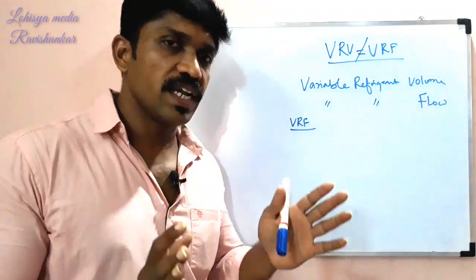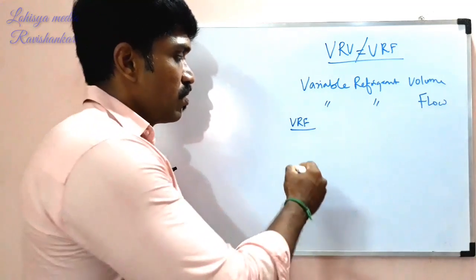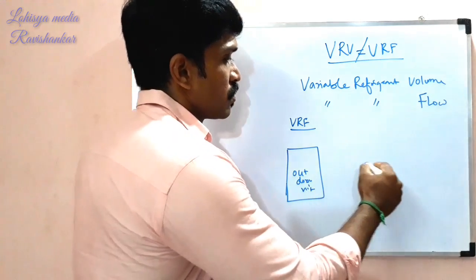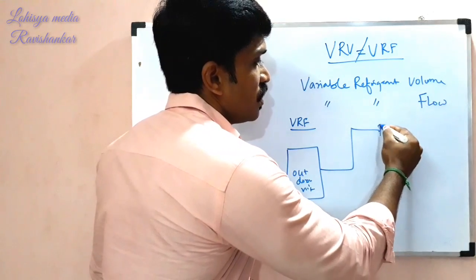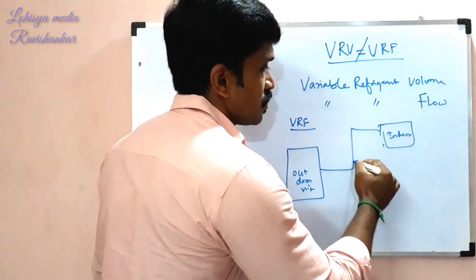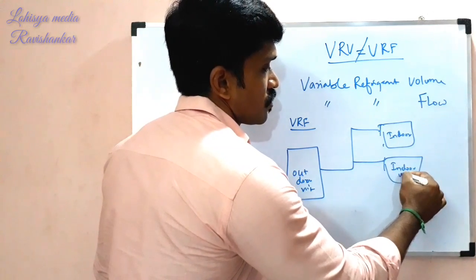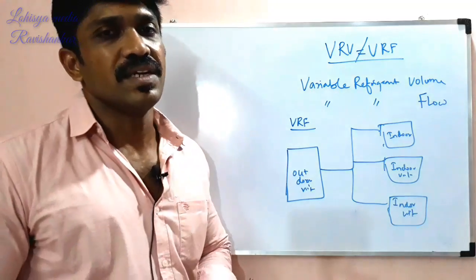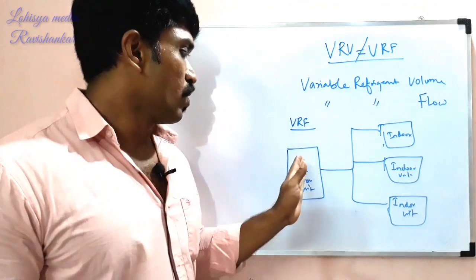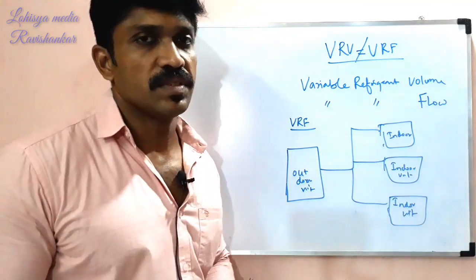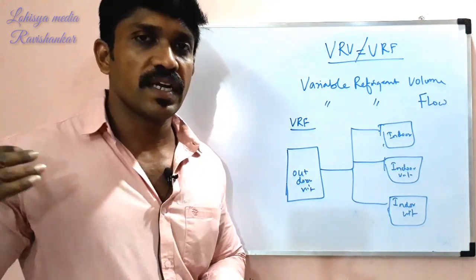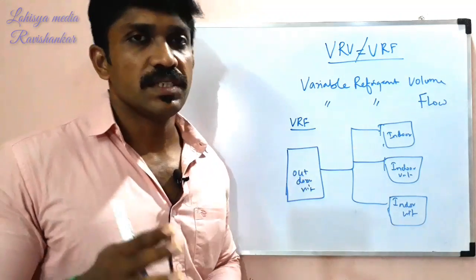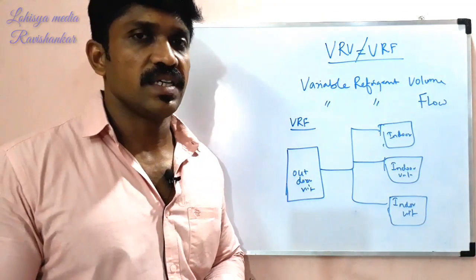This is the VRF concept. This is an outdoor unit. Multiple indoor units are used in this VRF system. For example, in an office with multiple rooms and a main hall, you can use cooling in each area and control the temperature of each room independently.